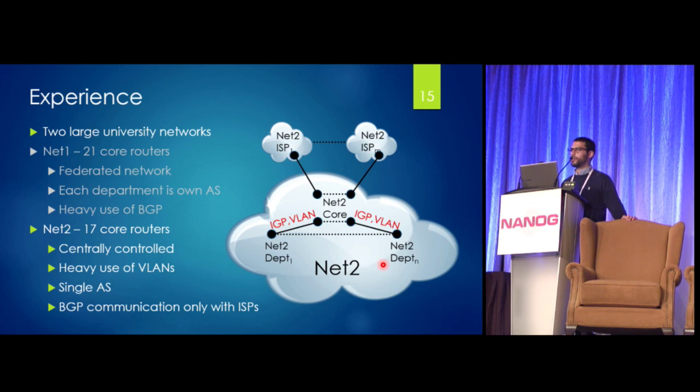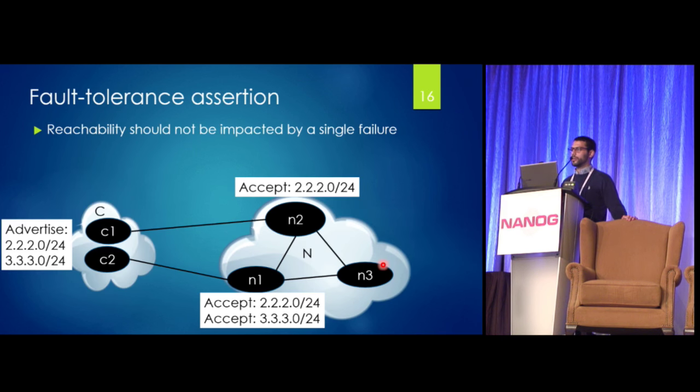On these two networks, we tested a variety of forwarding plane properties, two of which I'll discuss. The first one was multipath consistency, which I've shown you earlier, and the second one is a check about fault tolerance. So we want to see whether reachability will be impacted by the failure of any single link in the network. So if you look at this network below, on the left there's a customer that's advertising two routes, 2.2.2.0 and 3.3.3.0. And on the right, this network has route maps that will accept the 2.2.2.0 network at N2 and will accept advertisements for both networks at N1. So if you were to actually turn off this link, then you would see 3.3.3.0 is no longer reachable because there's nobody to accept advertisements for it anymore. So this would be a violation of this fault tolerance property that we want to check.